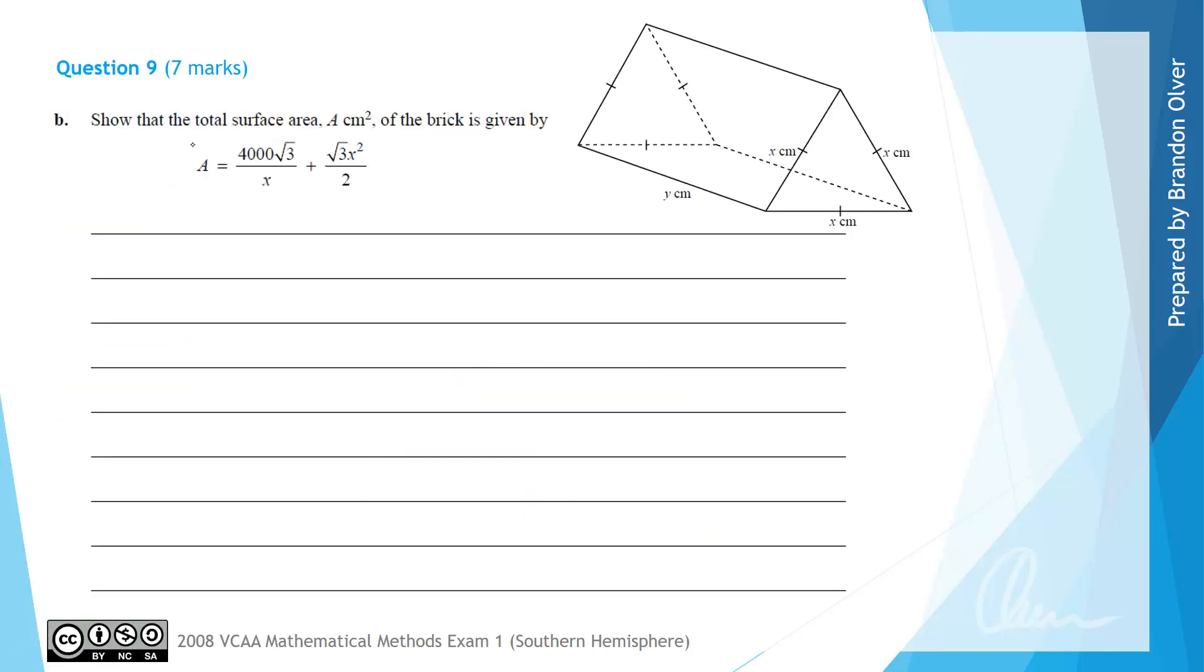For part B, we're asked to show that the total surface area of a brick is given by A equals 4000 root 3 over x plus root 3x squared over 2. The area of this triangular prism equals the sum of all its surfaces. We'd have 2 times the area of a triangle plus 3 times the area of a rectangle. Therefore our area equals 2 times the area of the triangle, which is half times the base x times the height, and the height we found to be root 3x over 2. That was found in part A, and we also explored the use of the formula half ab sine c as another way of calculating the area of a triangle.